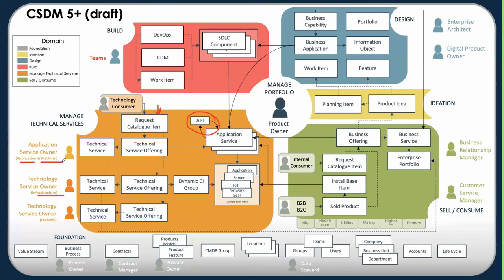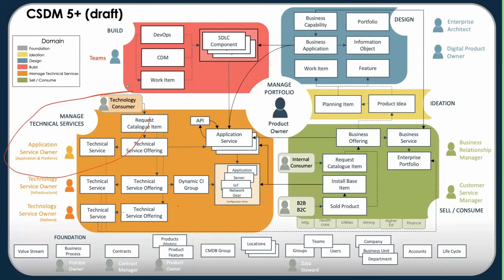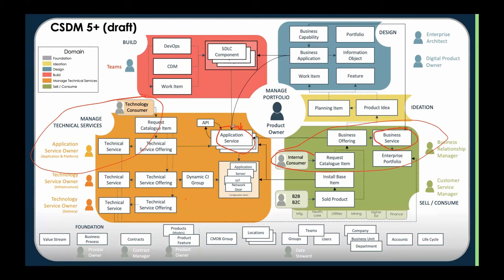When people are trying to understand this, which part of the diagram do they have the most trouble with? It varies — it stems from the fact that we have a very specific set of use cases for technical services that are different from business services and managing who those consumers are. Historically, before CSDM, there was no guidance on this. What people defined as a service was either super generic, everything in one table, but it meant something wildly different. Now they're trying to figure out that there are different use cases and different reasons to manage them differently.